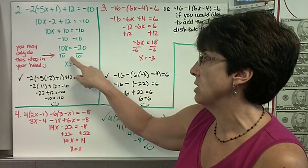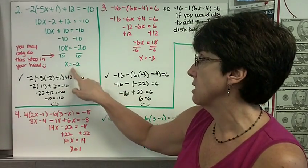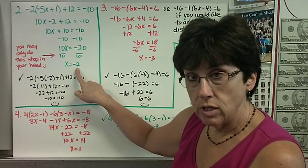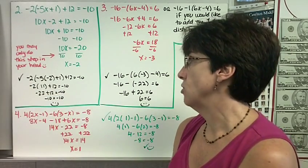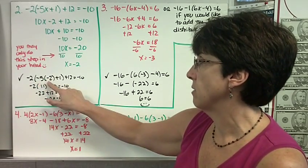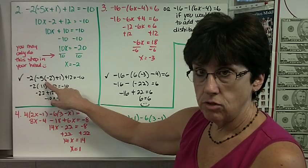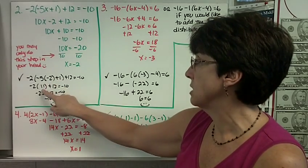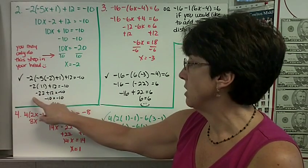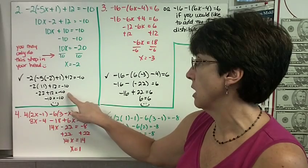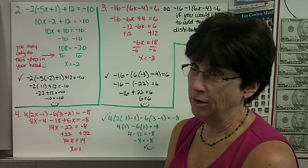Now I have 10x equals negative 20. This is the only step in this equation you may do in your head. Divide by 10, x equals negative 2. Substituting negative 2 into the original equation: negative 2 times the quantity of negative 5 times negative 2, plus 1, plus 12, equals negative 10. Negative 5 times negative 2 is positive 10, plus 1 is 11. Negative 2 times 11 is negative 22, plus 12 equals negative 10. Negative 10 equals negative 10.